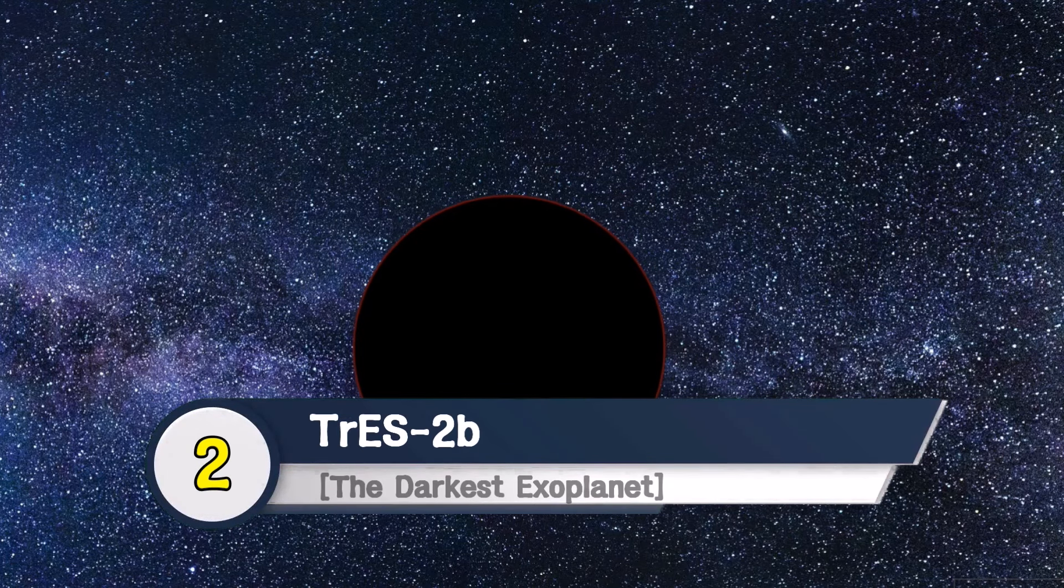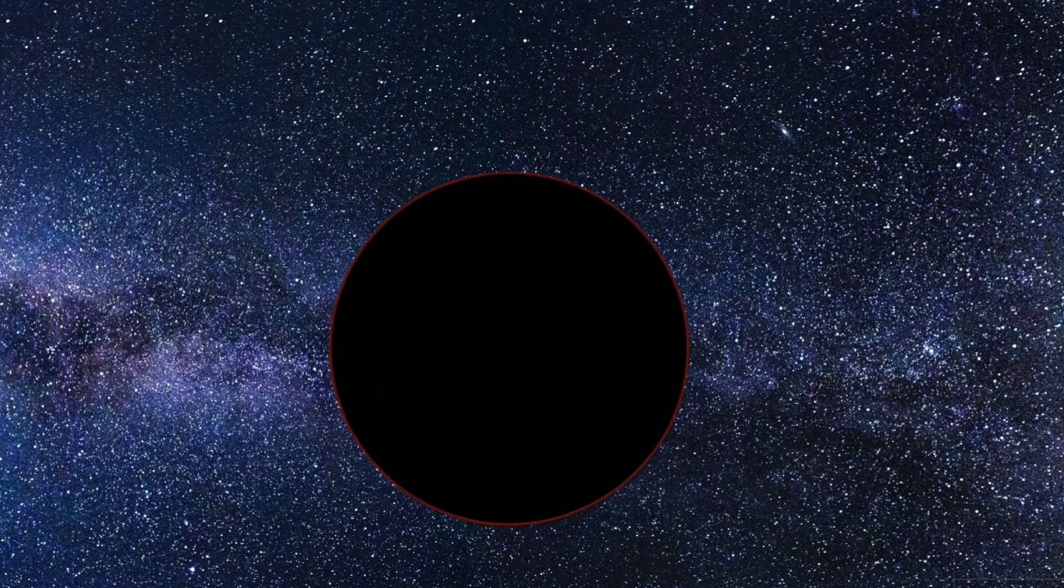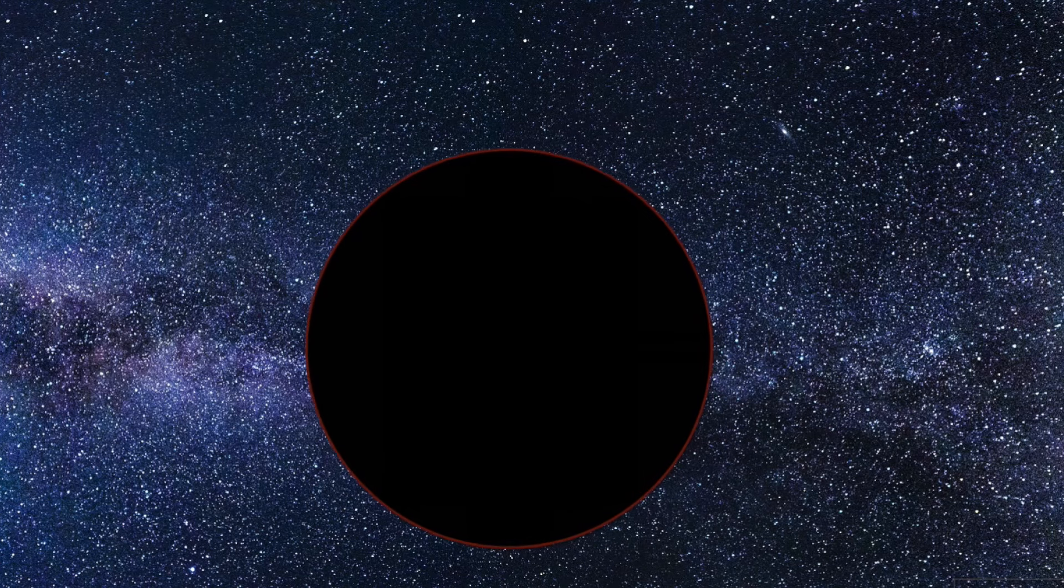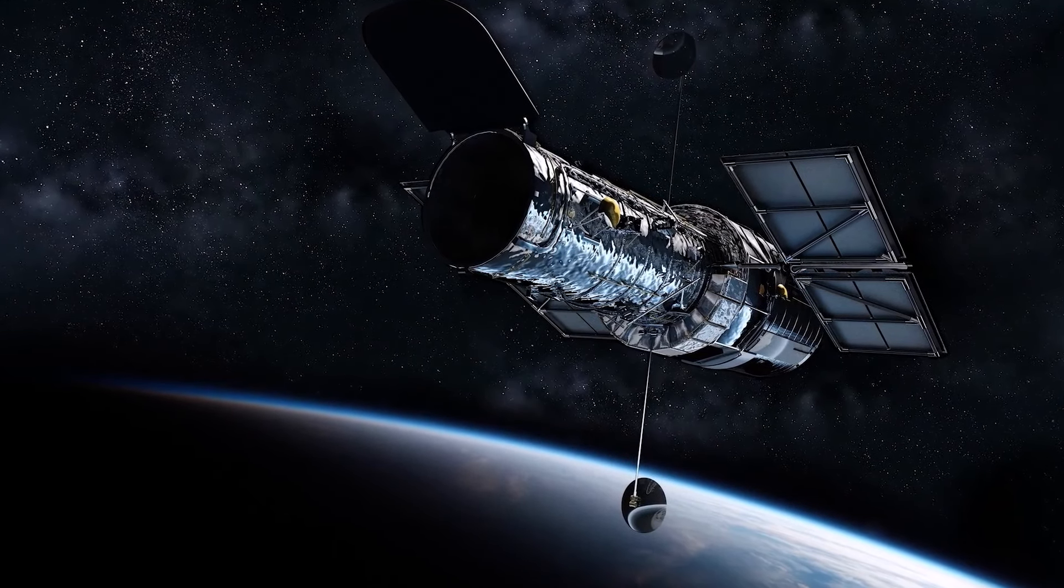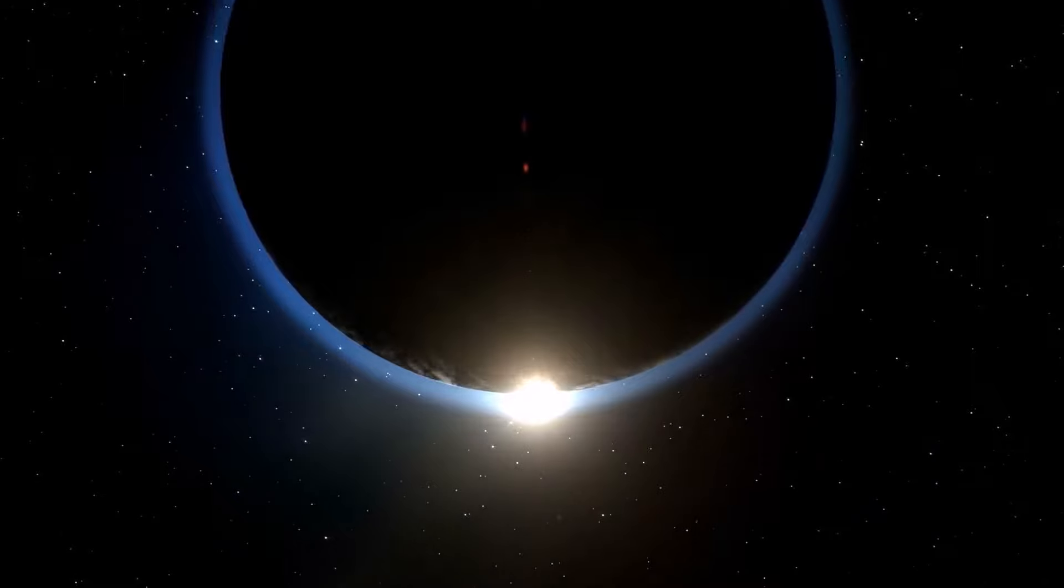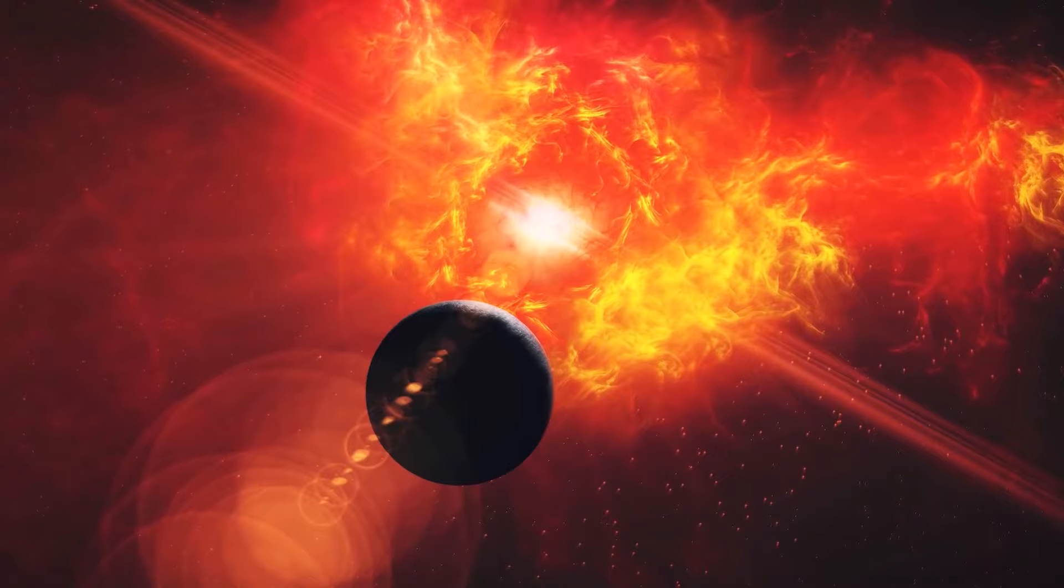TRES-2b, the darkest exoplanet. TRES-2b is an extrasolar planet known as the darkest planet in the universe. Discovered by NASA's Kepler Space Telescope in 2011, this Jupiter-sized world reflects less than 1% of the starlight that falls on it, making it darker than coal and black acrylic paint.